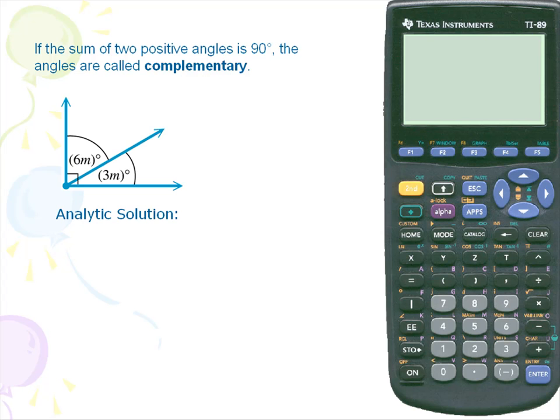Let's take a look at the analytic solution. Here we want to find the measures of the two angles 6m plus 3m. If we take a look at the drawing, we see that both of the angles form a 90 degree angle. We'll simply set 6m plus 3m equal to 90 and we'll attempt to solve for m.